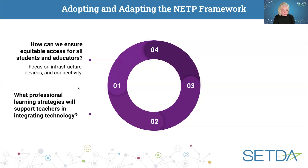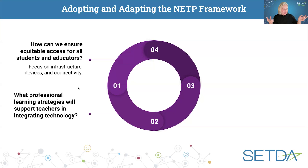Rural states might prioritize improving connectivity, while urban states might be focusing on scaling up professional learning. So again, look at the different ways that you put this together depending on your state's unique context.